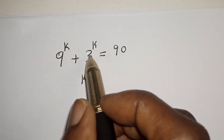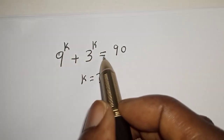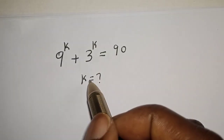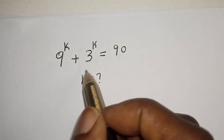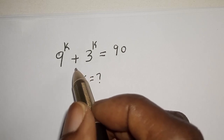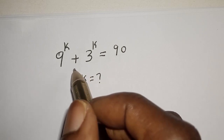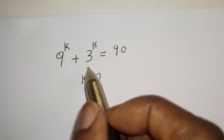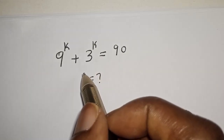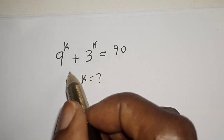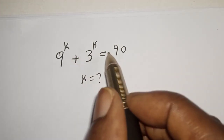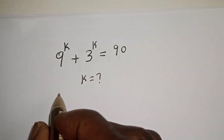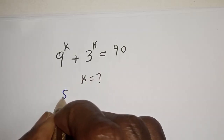9 raised to the power k plus 3 raised to the power k is equal to 90. What is the value of k? Hi everyone, welcome to my class. In this class we want to find the value of k from this given equation. Before we proceed, please don't forget to like, share, comment and subscribe.